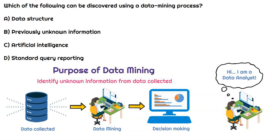That's how data mining can be very important and critical for a company to perform, because the main purpose is to identify unknown information — really just patterns and trends from data that can be used to make decisions in a business. So the correct answer is going to be previously unknown information, which refers to those patterns and trends.